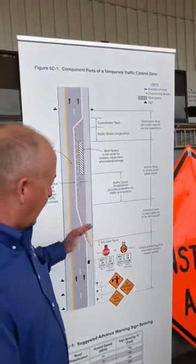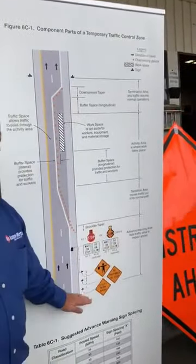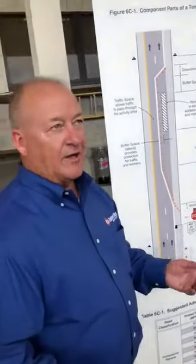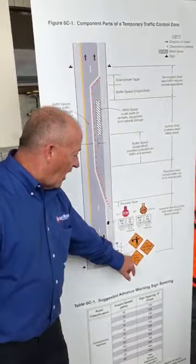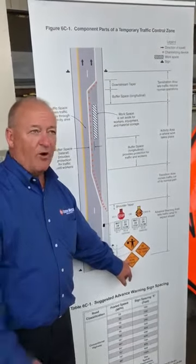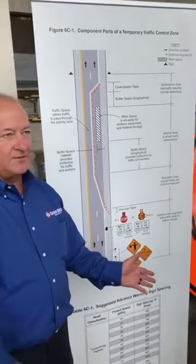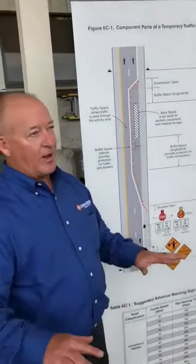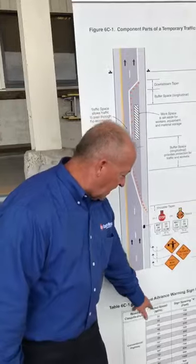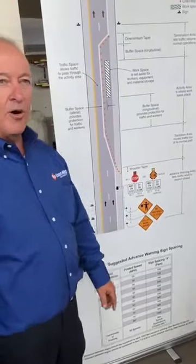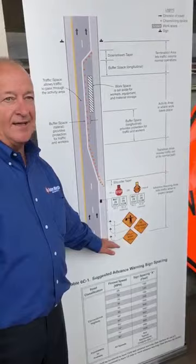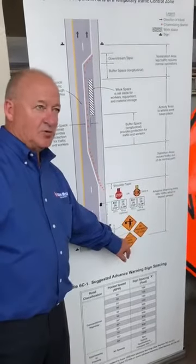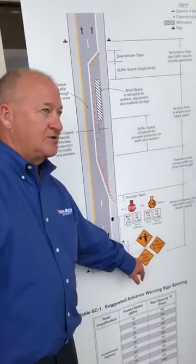What we want to talk about today is the advanced warning area. In a residential area at 25 miles per hour, you can get away with a utility work ahead sign about a hundred feet before where you're working — but that's about the only place it's okay. Once you get up to 30 miles per hour or more, you really need to go to at least three signs. The first one is going to be that there's work ahead — in your case, utility work.